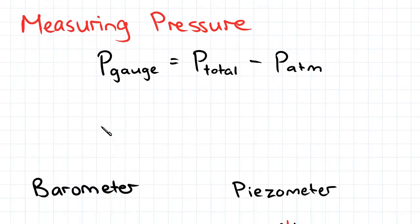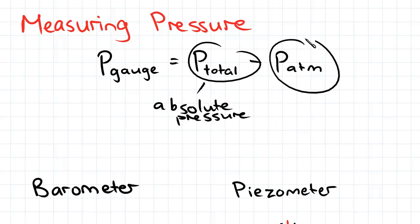Now measuring pressure, I'll introduce you to gauge pressure. Gauge pressure is simply the total pressure minus atmospheric pressure. Total pressure is sometimes referred to as absolute pressure. And atmospheric pressure is a constant 101.3 kilopascals. You'll usually be given that, but it's handy just to remember.